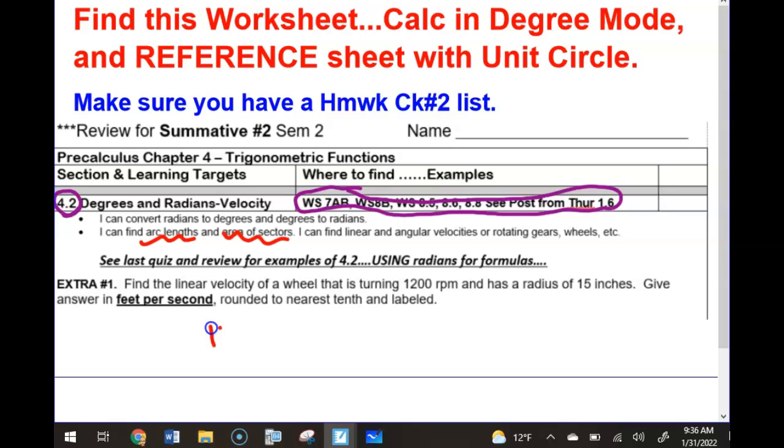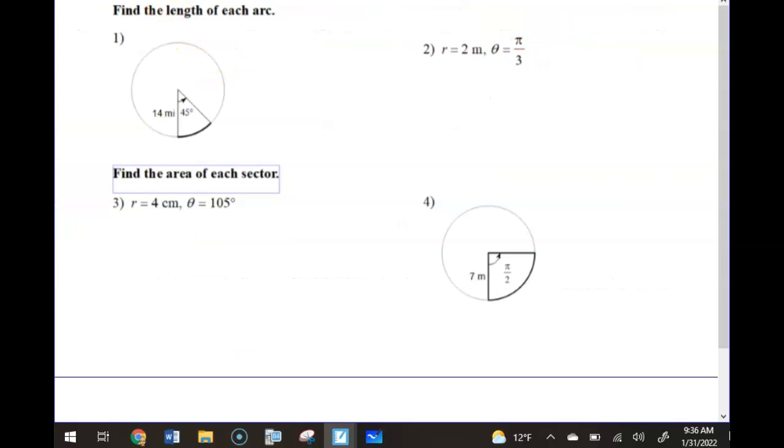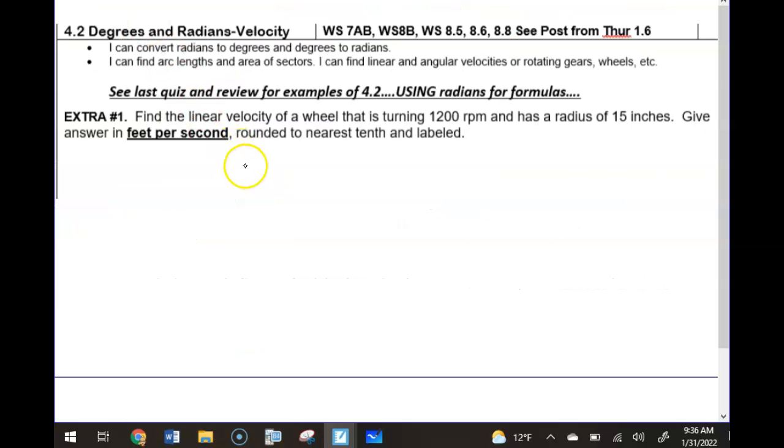All right, so the extra practice I put on here, I do have an arc length and area of a sector question if you want me to go over them. But the biggie is angular or linear velocity is on there. Okay, so here's my extra example for that. You have this one, so please be with me here. It says, find the linear velocity of a wheel that is turning 1,200 RPMs and has a radius of 15 inches. Give the answer in feet per second, rounded to the nearest tenth and labeled.